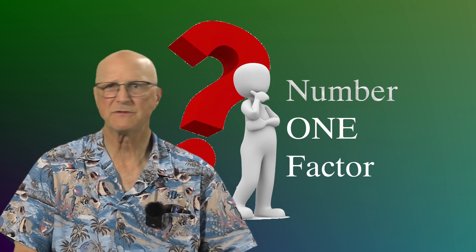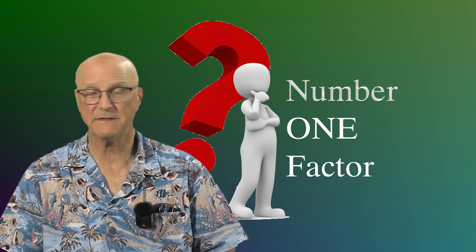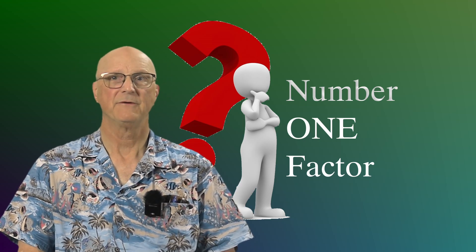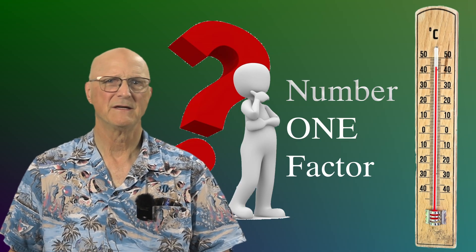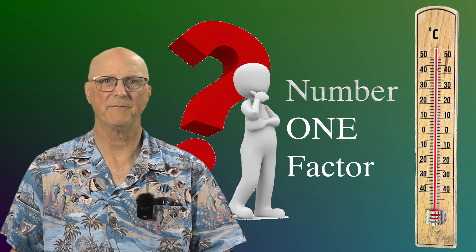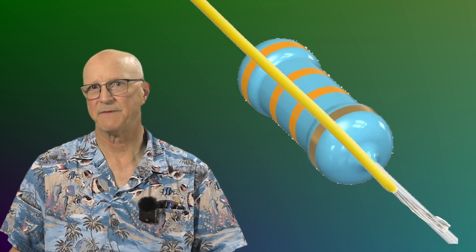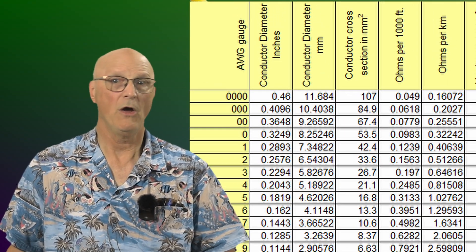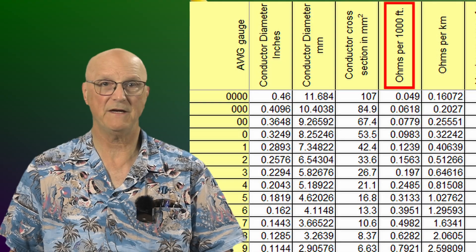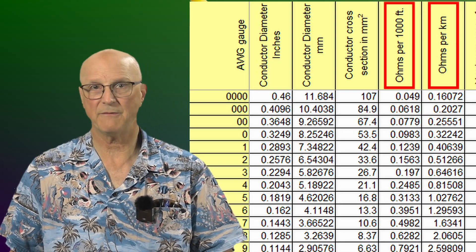So what is the number one factor which contributes to the current rating of any particular conductor? Well, the answer is quite simple. Temperature rise. So let's just think about this for a moment. Every wire has some resistance. And we can see this on the wire tables in the form of the ohms per 1,000 feet or ohms per kilometer values.